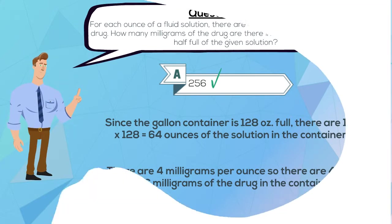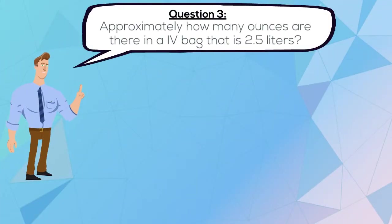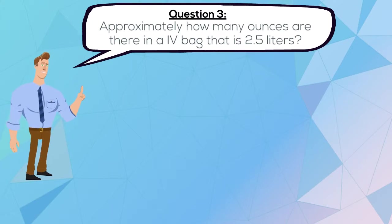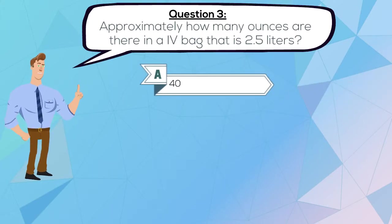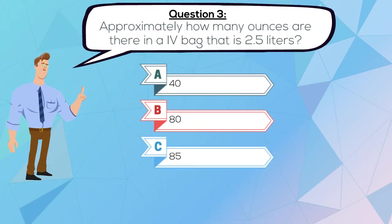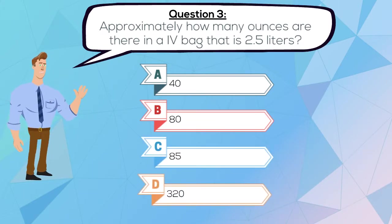Question 3. Approximately how many ounces are there in an IV bag that is 2.5 liters? A. 40, B. 80, C. 85, or D. 320.